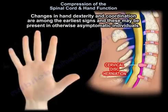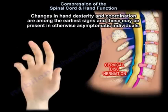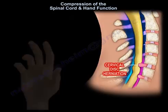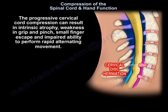Changes in hand dexterity and coordination are among the earliest signs, and these may be present in otherwise asymptomatic individuals. Progressive cervical cord compression can result in intrinsic atrophy, weakness in grip and pinch, small finger escape, and impaired ability to perform rapid alternating movement.